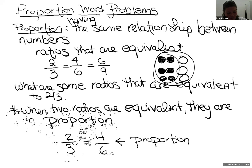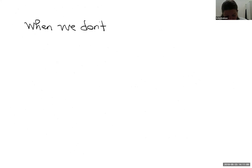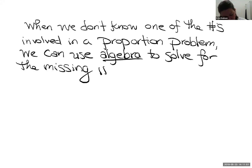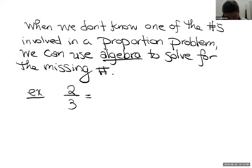When we don't know one of the numbers involved in a proportion problem, we can use algebra to solve for the missing number. Here's a simple example — you might not even need algebra for this one, but we'll look at more complex ones today where you definitely will. For example: the relationship of two to three is equivalent to eight out of how many? I don't know one of the numbers, and I could use algebra to solve for that.